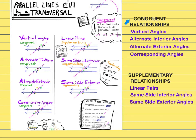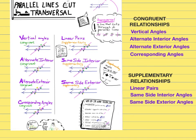We have four different types of relationships where the angles are exactly congruent to each other: vertical angles, alternate interior angles, alternate exterior angles, and corresponding angles.